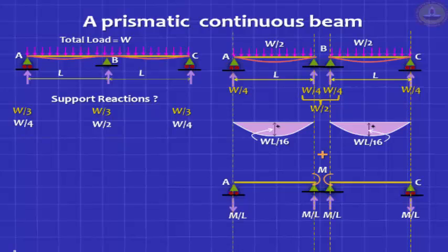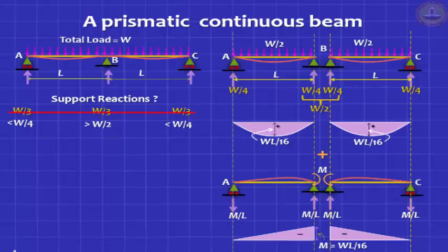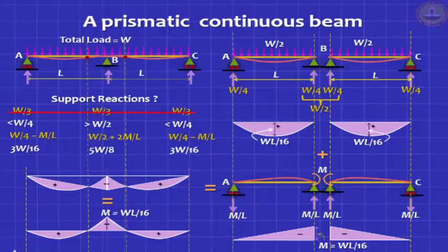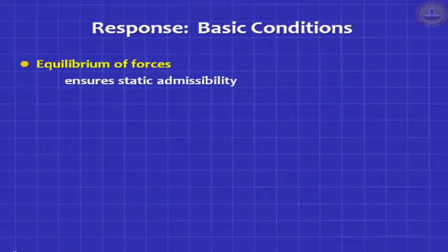The moment you bring in that moment M, you get additional reactions. To satisfy equilibrium, the reactions in the middle will go up by M/L and the ones at the two ends will go down by M/L. Adding these up, you find that both answers are wrong — the middle reaction will exceed W/2 and the end reaction will be less than W/4. You can analyze this problem by any of the methods and find the moment is WL/16. This is an introduction to the importance of equilibrium and compatibility in solving such problems.